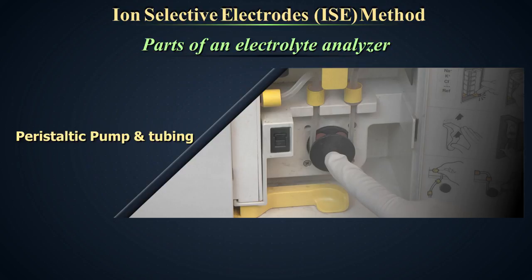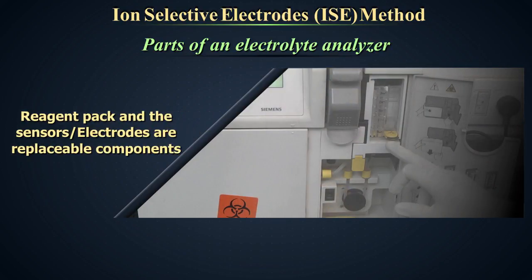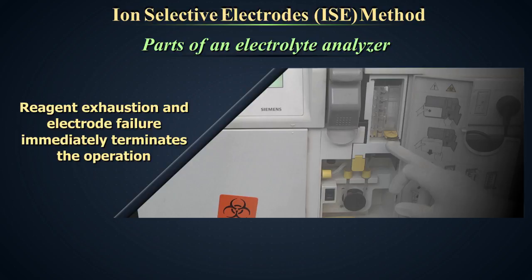Peristaltic pump and tubing. The reagent pack and the sensors are replaceable components of the instrument. Spares for both should always be kept as a backup as both are critical for running the samples. Reagent exhaustion or expiry and electrode failure will immediately terminate the operation. Hence, to ensure smooth functioning always keep these components in backup.